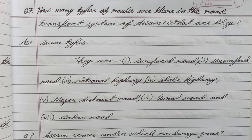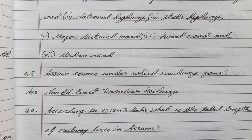Answer: Seven types — surfaced road, unsurfaced road, national highway, state highway, and others. Question number eight: Assam comes under which railway zone? Answer: North East Frontier Railway.